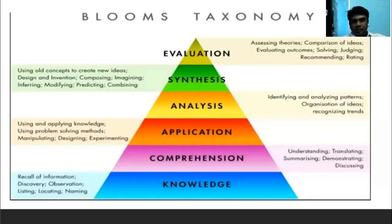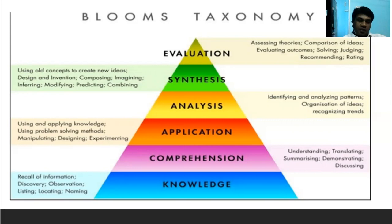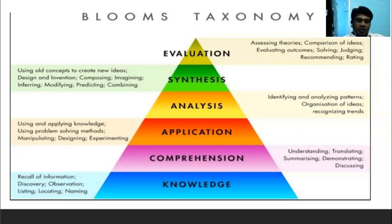Bloom's Taxonomy is incorporated with our research paper. Research paper is based on Bloom's Taxonomy. First is evaluation — comparison of new ideas. Then synthesis — using old concepts to create new ideas. Then analysis — identifying and analyzing new ideas. Then application — applying knowledge, designing, and problem-solving methods. Then comprehension — demonstrating and discussing knowledge. And finally, observation and recall of information.